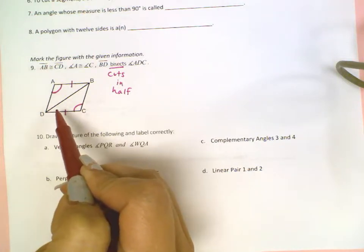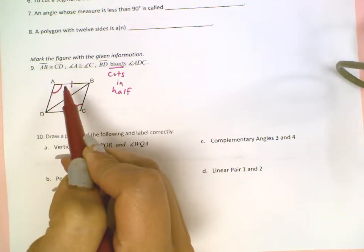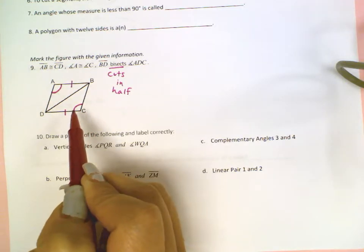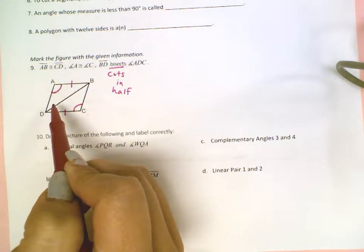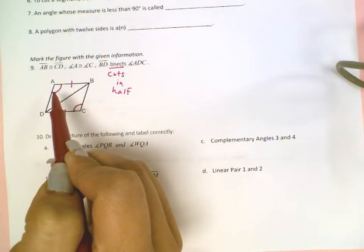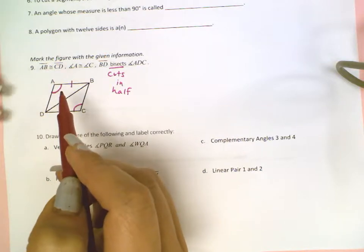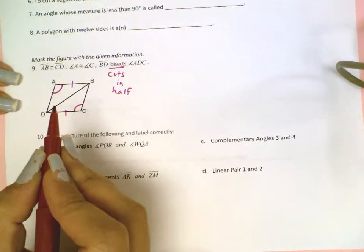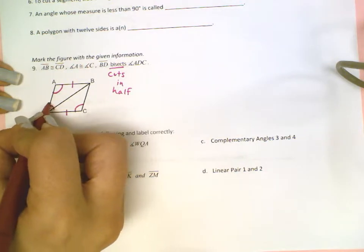These two must be congruent now. I can no longer use one arc as I already used one arc and that would mean this angle here is congruent to this angle. So I need to now either put two arcs or an arc with a dash going through it. I'll put two arcs.